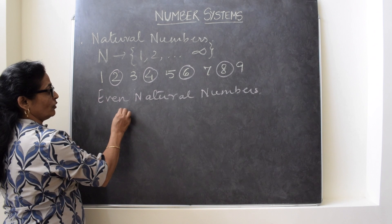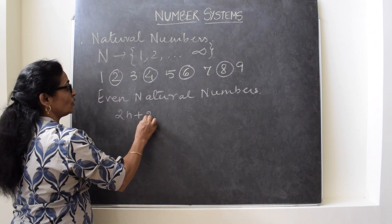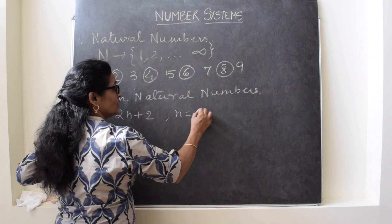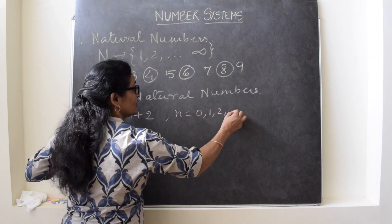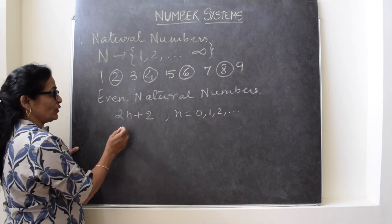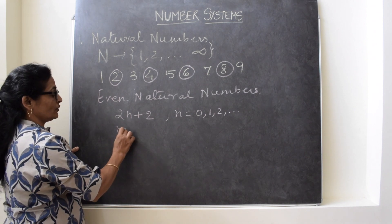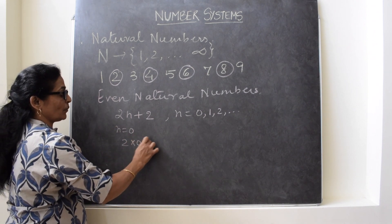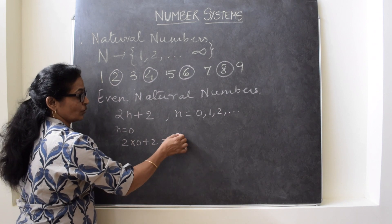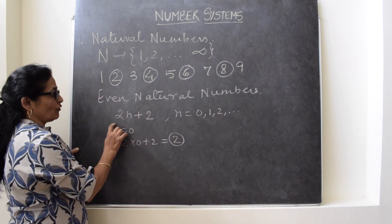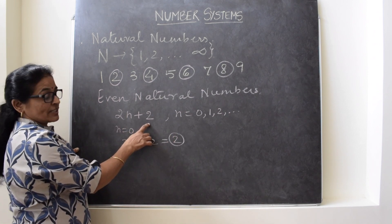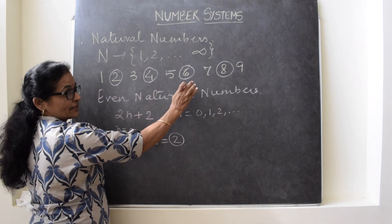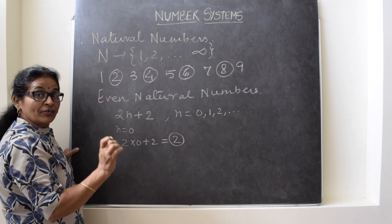The general form of even numbers is 2N plus 2, where N is equal to 0, 1, 2 and so on. So when you substitute N equal to 0, this will become 2 times 0 plus 2, that is 2. So like this, the general form 2N plus 2 satisfies the even numbers. Now these even numbers are also infinite.